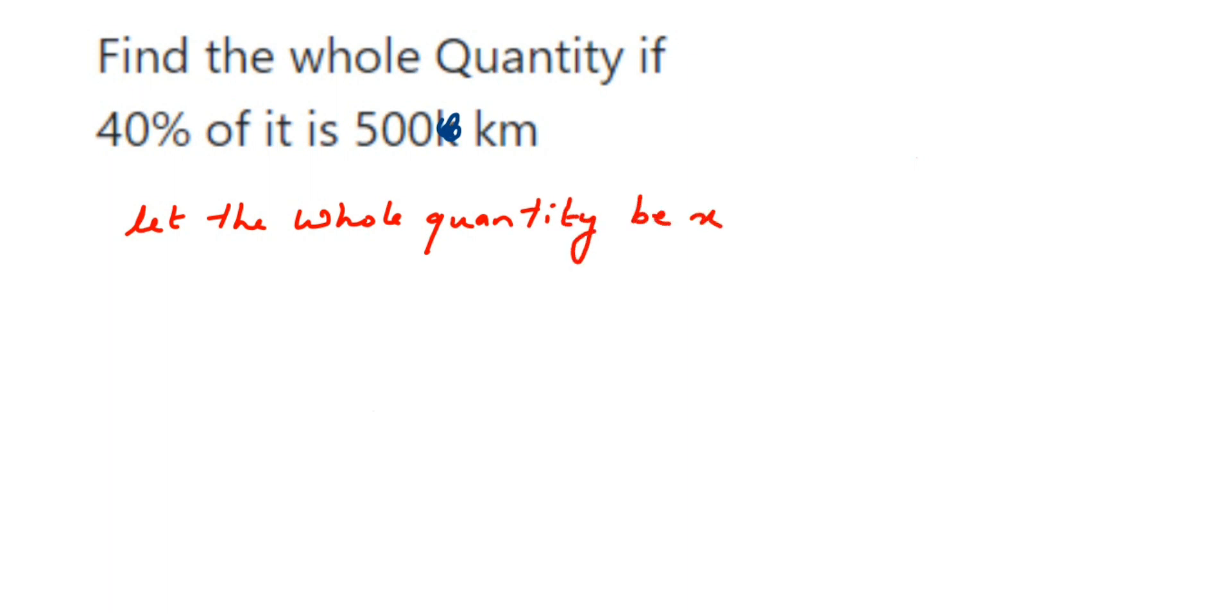Then 40% of the whole quantity - we have assumed it as x - so 40% of x is equal to 500 km. We have to find out the value of x here. So 40% means 40 upon 100, or remove the percentage sign and divide by 100. 'Of' means multiplication, so we get 40/100 × x = 500.